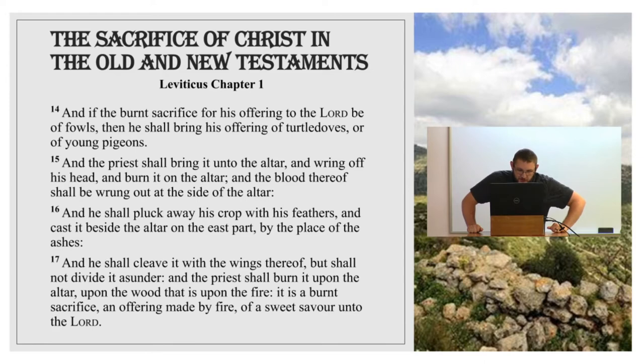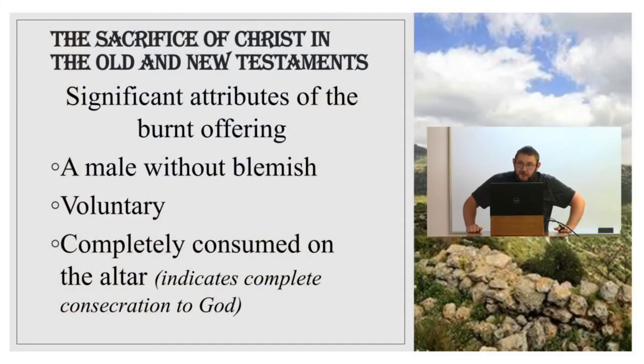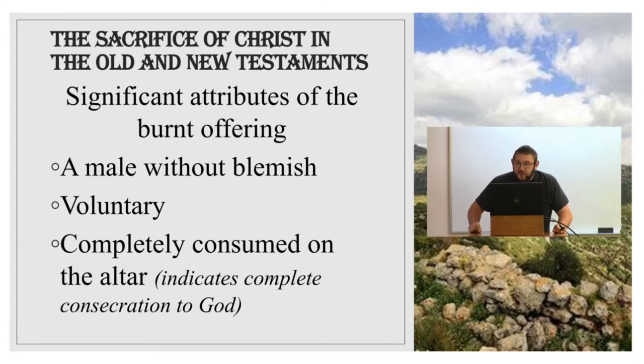I want to make note that these passages in Leviticus seem to indicate, when you look at the offerings that Mary and Joseph made, that they might have been poorer folks. The three primary things to take away from the burnt offering: there was to be a male without blemish, signifying Christ who was without sin; it was a voluntary sacrifice, just as Christ voluntarily gave himself; and he was completely consumed on the altar, indicating complete consecration to God.